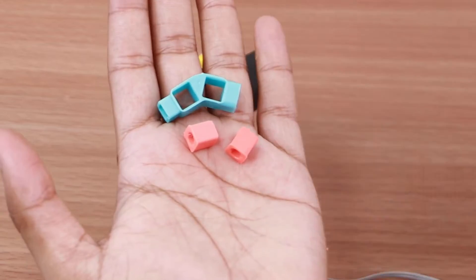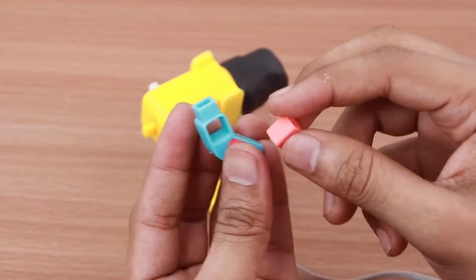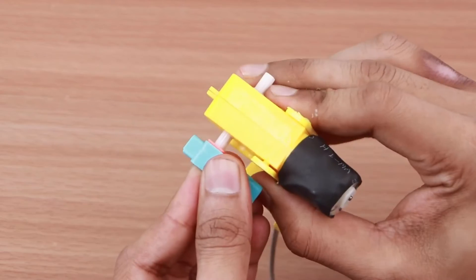Take a two-hole elbow and two BO shafts. Join them together. Connect this to the BO motor shaft.